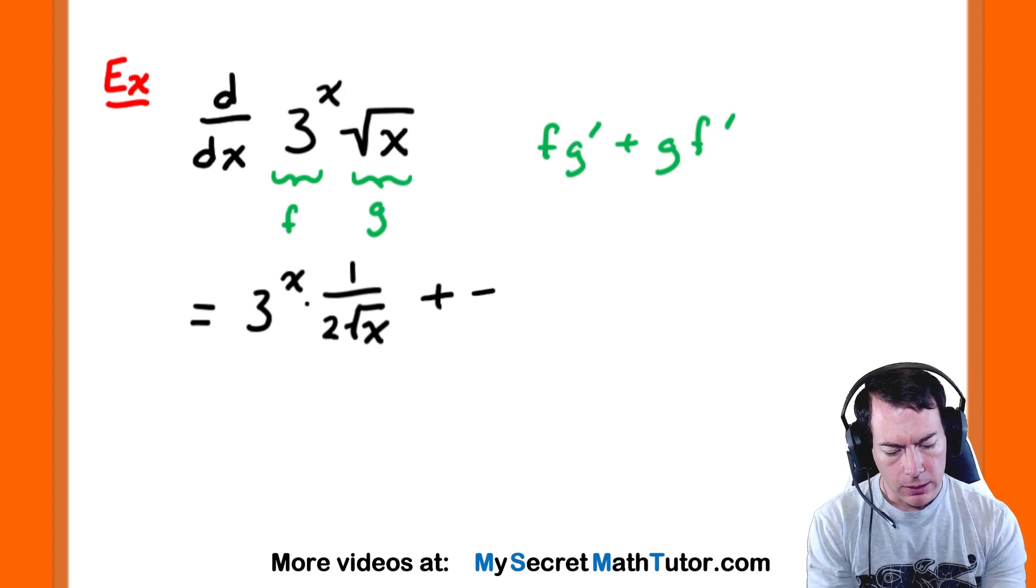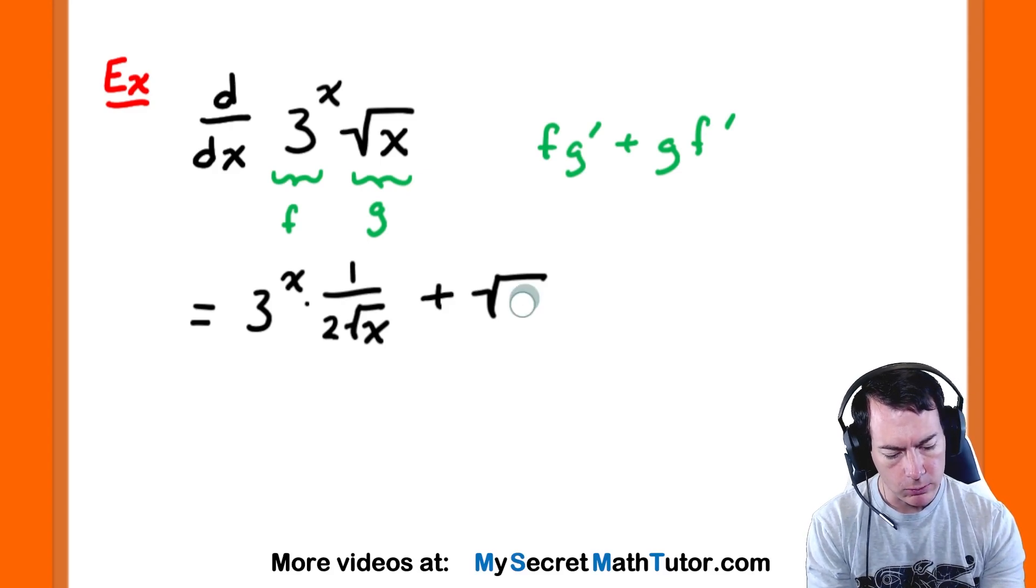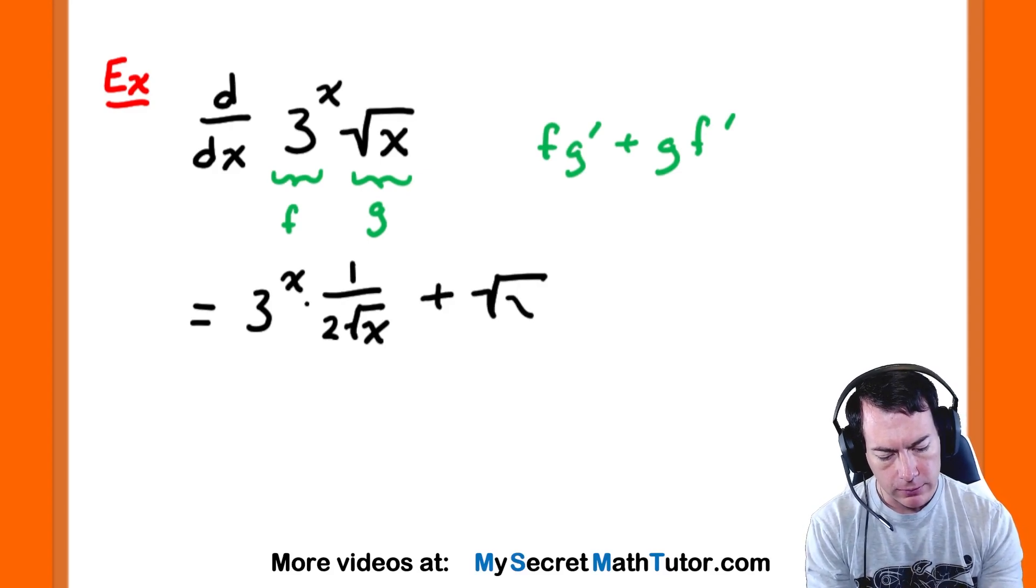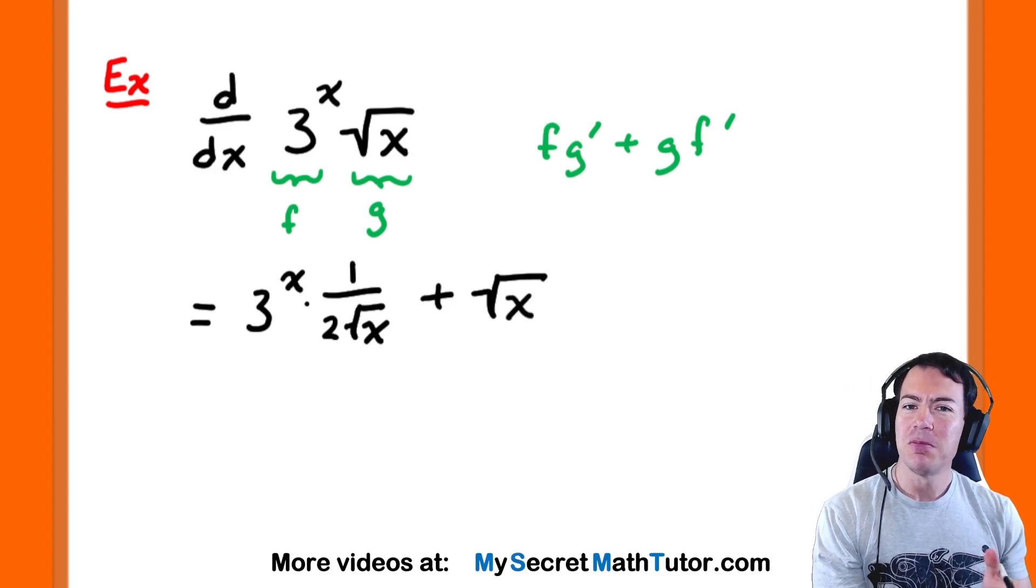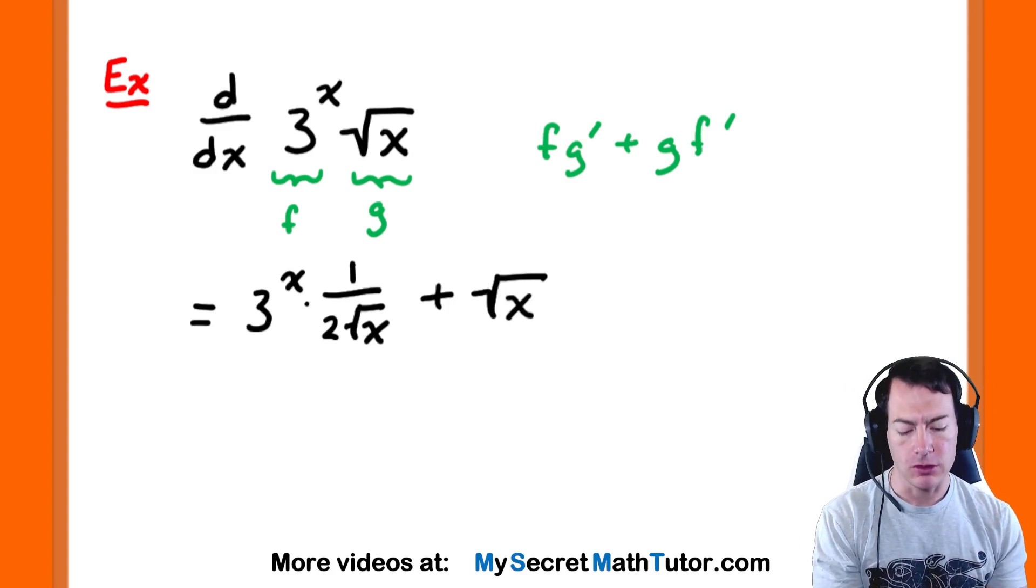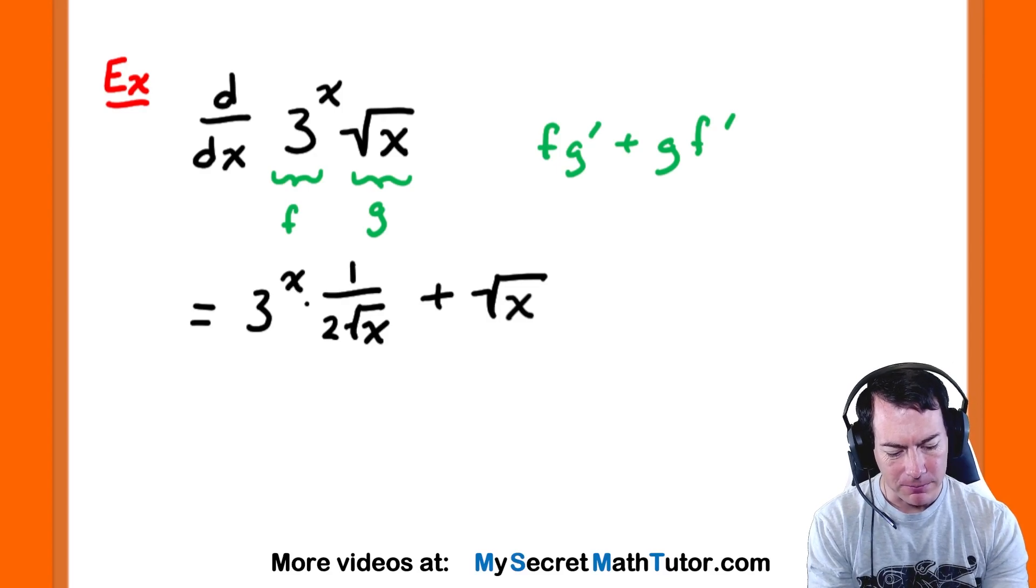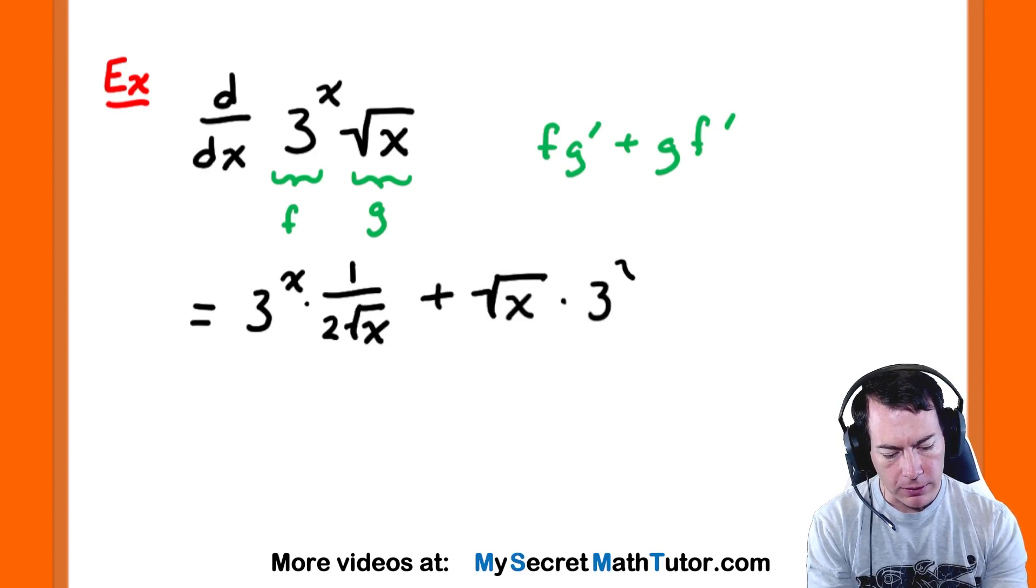Plus, now we have our g function just as it is. So no, no real change in that one. We'll just have the square root of x. And now, now we actually need to multiply by the derivative of our f function. So here's where that derivative comes into play. So 3 to the power of our x multiplied by the natural log of 3.